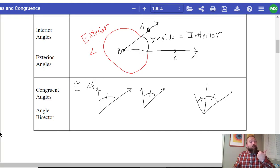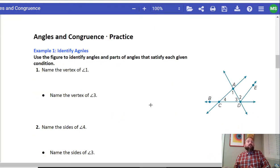If we have an angle bisector, it would bisect the angle in two. All right guys, let's continue. So let's get into some angle congruence practice right now. So example one, identify angles.